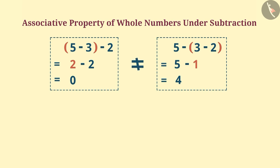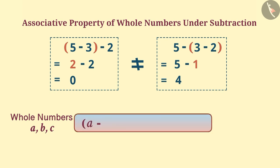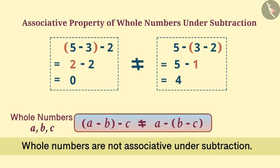Note, only in this case, subtracting any 3 whole numbers A, B, C by making different groups result in different results. This means A minus B minus C and A minus B minus C are not equal. That is why whole numbers are not associative under subtraction.